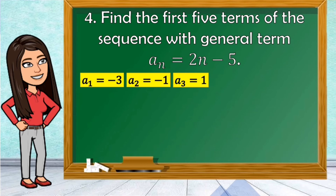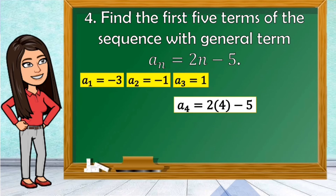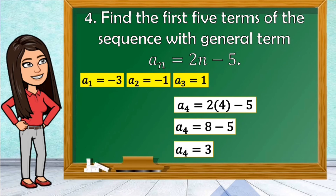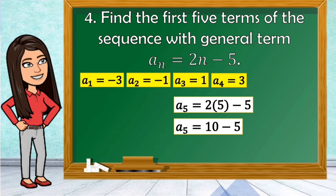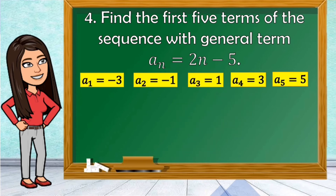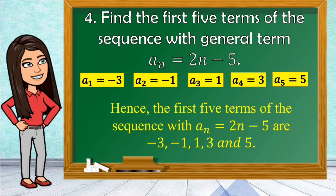To get the fourth term, substitute n equal to 4: a sub 4 is equal to 2 times 4 minus 5. 2 times 4 is 8, and 8 minus 5 is 3. The fourth term is 3. To get the fifth term, substitute n equal to 5: a sub 5 is equal to 2 times 5 minus 5. 2 times 5 is 10, and 10 minus 5 is 5. Hence, the first 5 terms of the sequence with a sub n equal to 2n minus 5 are negative 3, negative 1, 1, 3, and 5.